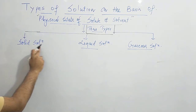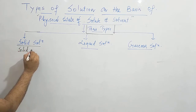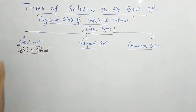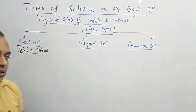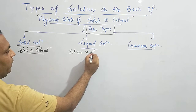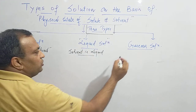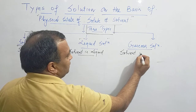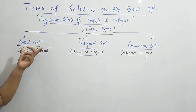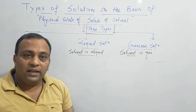Solid solutions are the solutions which contain solid as solvent. And if the solvent is liquid, then all such types of solutions are said to be the liquid solutions. And in the gaseous solutions, the solvent is gas. So if your solvent is solid, it is said to be solid solutions; if solvent is liquid, it is liquid solutions; and if it is gas, these are said to be the gaseous solutions.